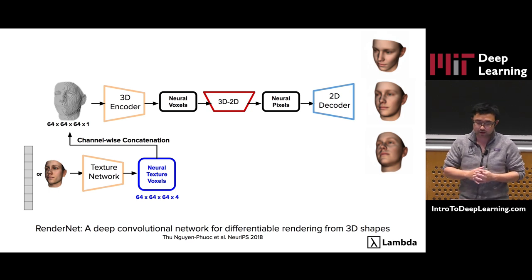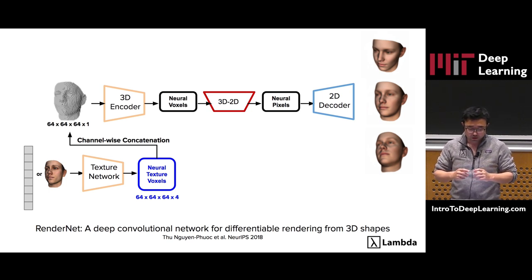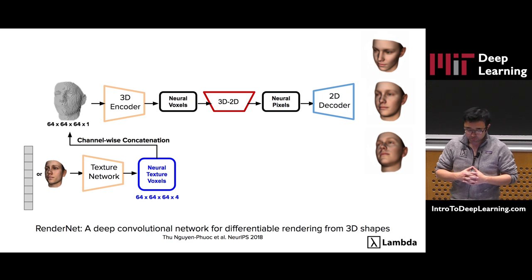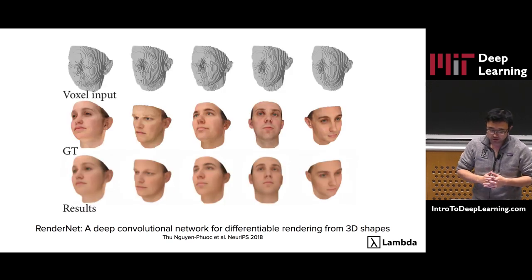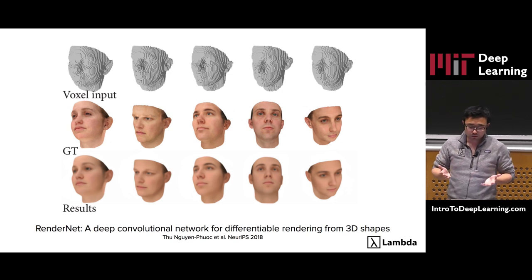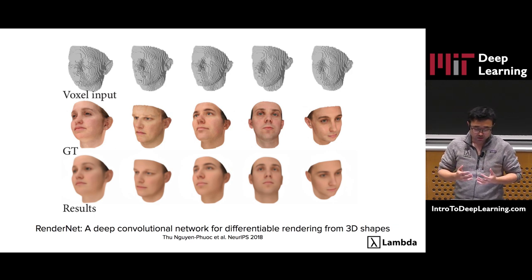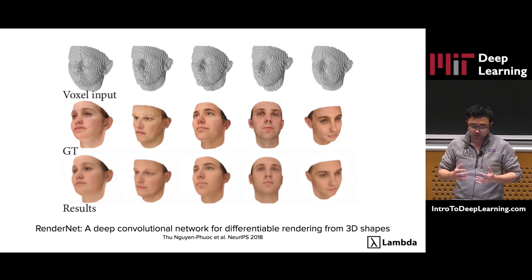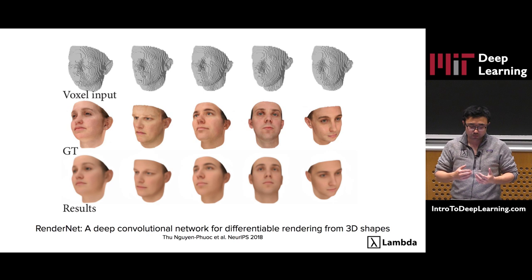RenderNet can also be used to render textured models. In this case, we learn an additional texture network that encodes input texture into neural texture voxels, and these neural texture voxels are concatenated with the input shape voxels channel-wise, and the concatenated voxels are fed into the network to render. These are some results of rendering textured models. The first row is the input voxels, the second row is the ground truth reference image, and the third row is our result from RenderNet. The ground truth image obviously has sharper details, but in general RenderNet is able to capture the major facial features and correctly compute visibility and shading.